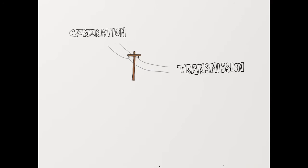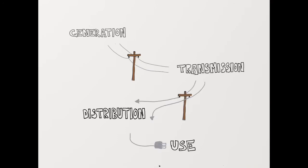The energy system is composed of four main parts: generation, transmission, distribution, and end use.